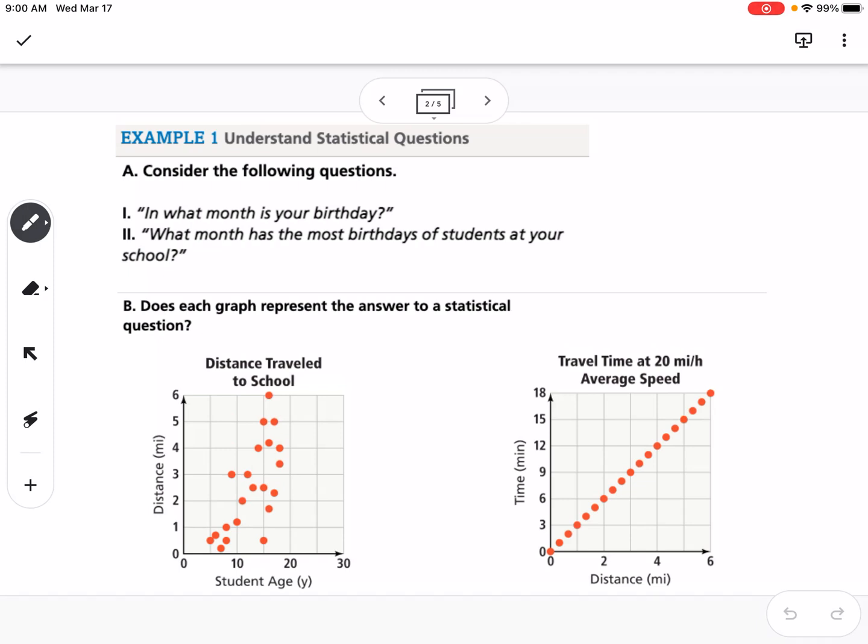Comparing those two questions, the first question would have one piece of information, whereas if we're answering the question what month has the most birthdays of students at your school, that would have a collection of many responses. So our second question there is what we call a statistical question.